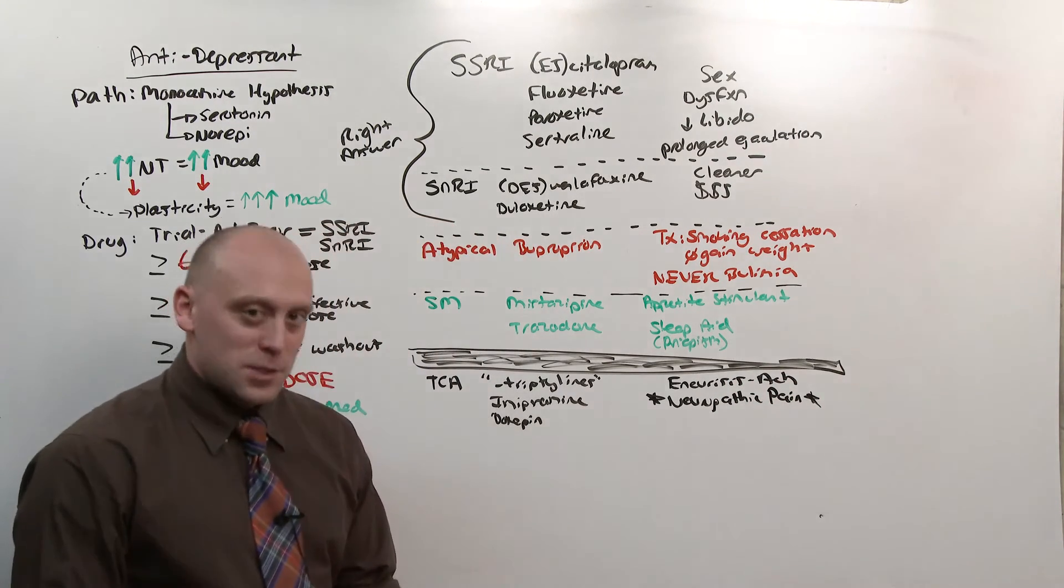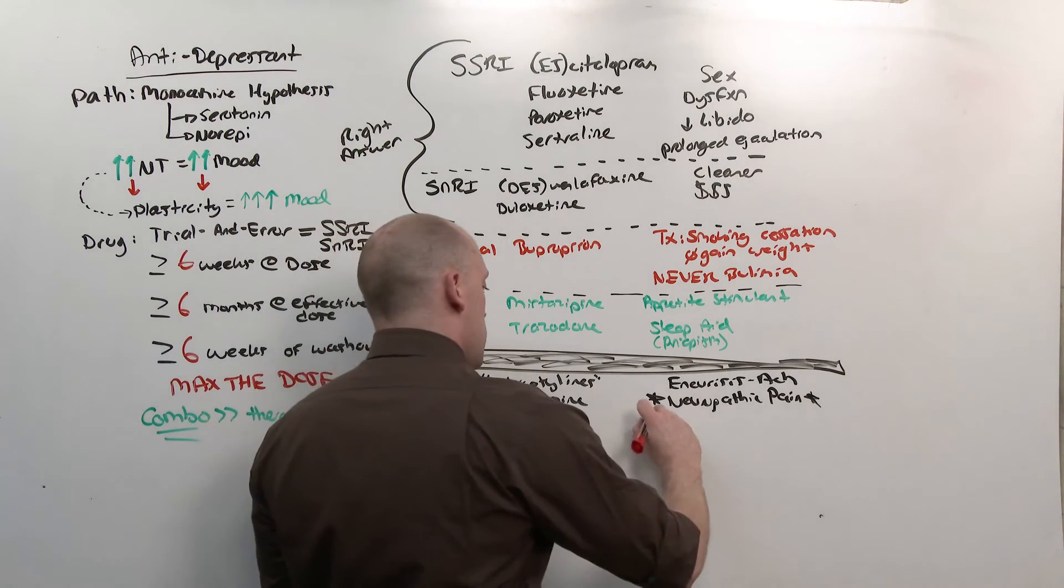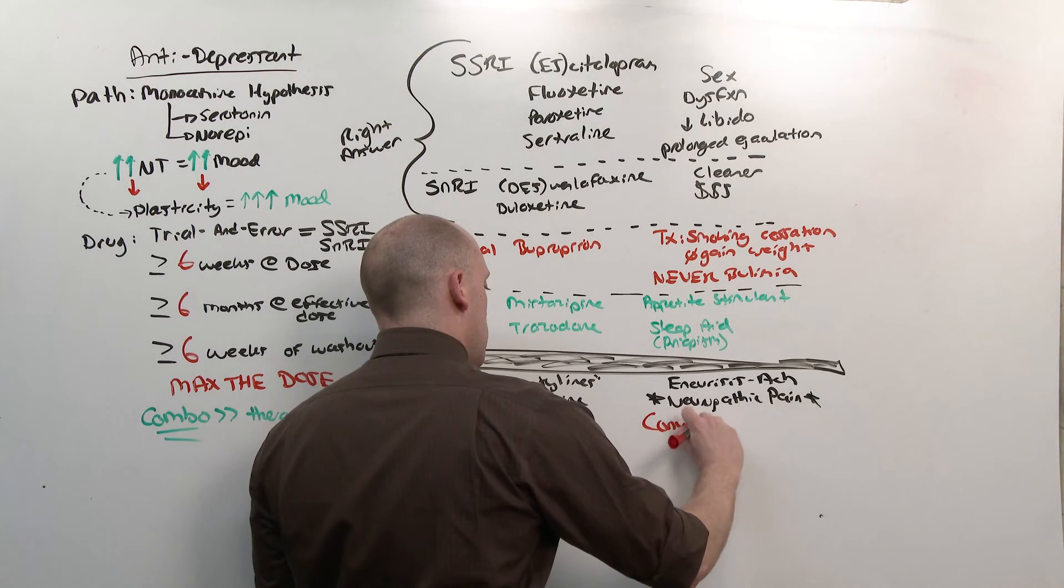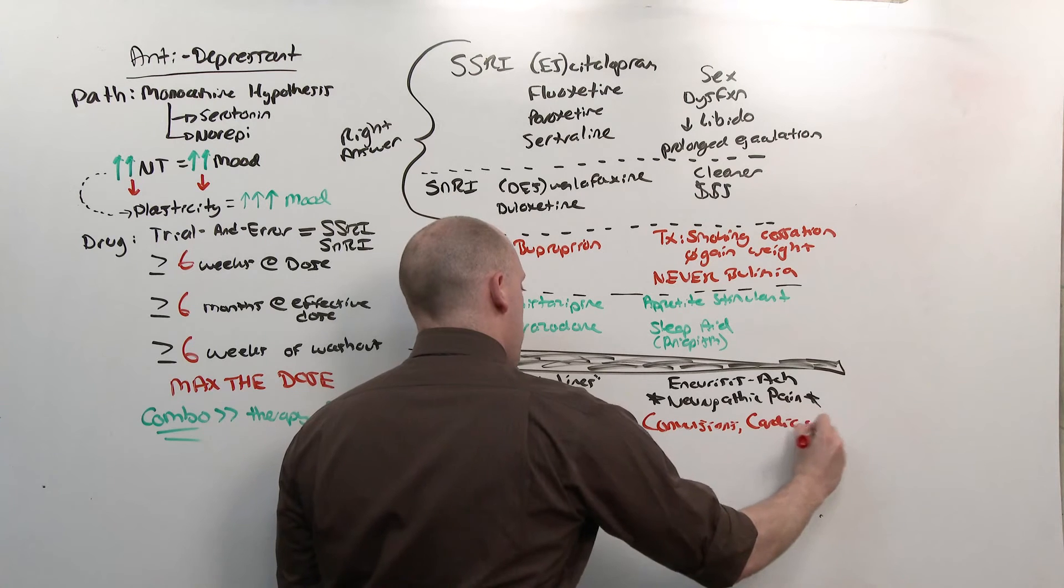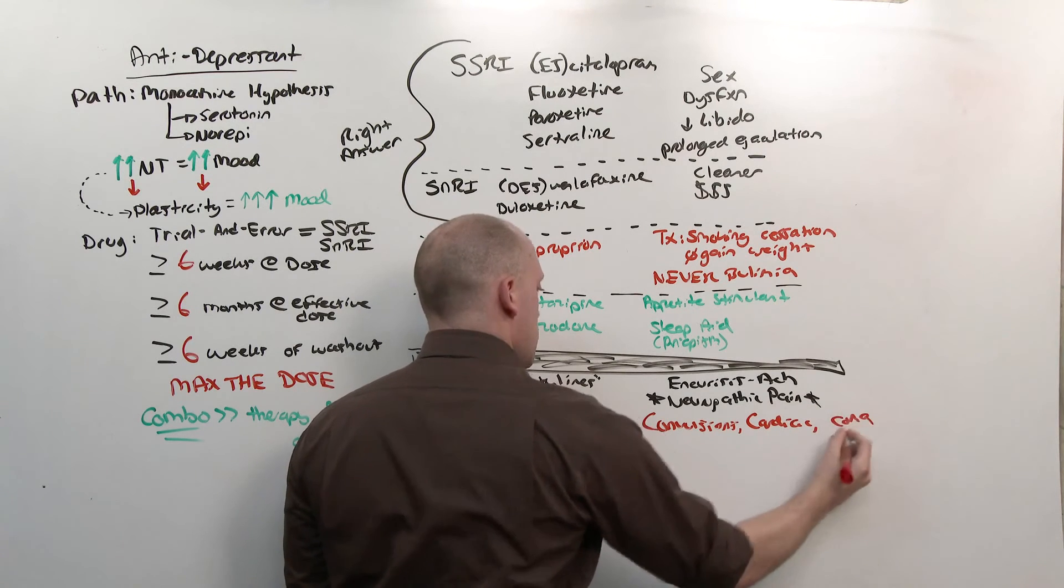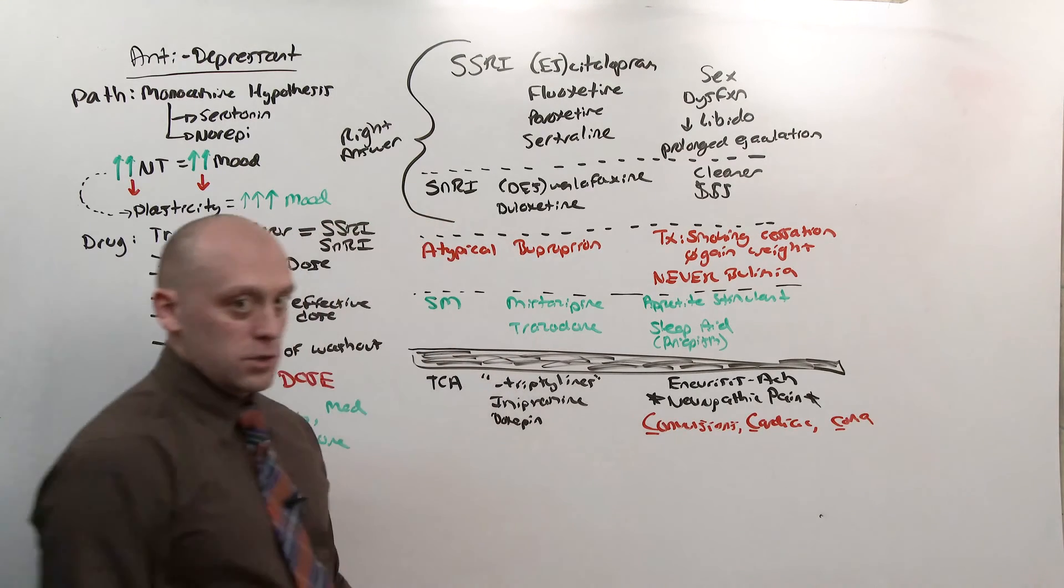Where you're going to see tricyclics used the most is going to be in the treatment of neuropathic pain, especially in the way of diabetic neuropathy. But if you see a test question about a TCA, you're probably going to get asked about the three C's, which is going to be convulsions, cardiac toxicity, and coma. That is, it causes altered mental status, prolonged QT and other arrhythmias, and it can cause seizures.